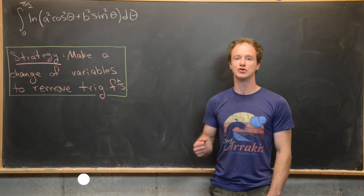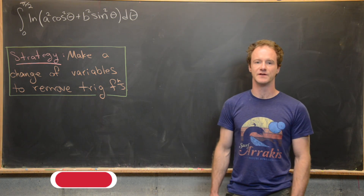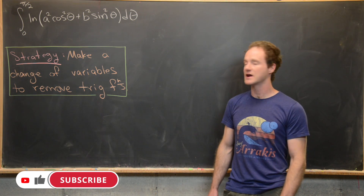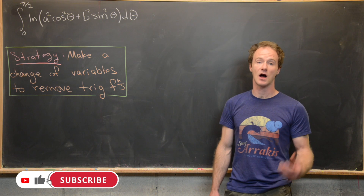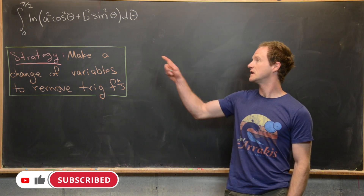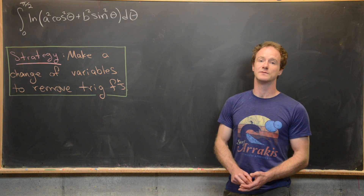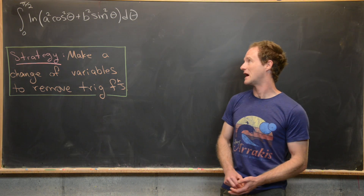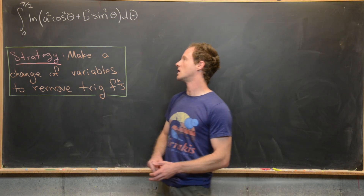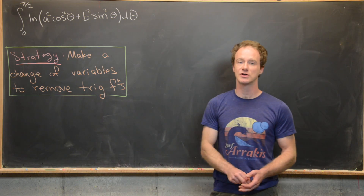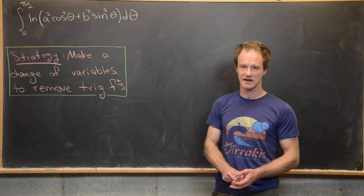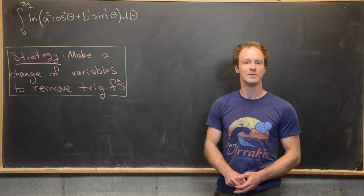This is going to be a classic 'do a hard integral' video. The integral we look at here is a logarithmic trigonometric integral given by the integral from zero to pi halves of the natural log of a squared cosine squared theta plus b squared sine squared theta, d theta.